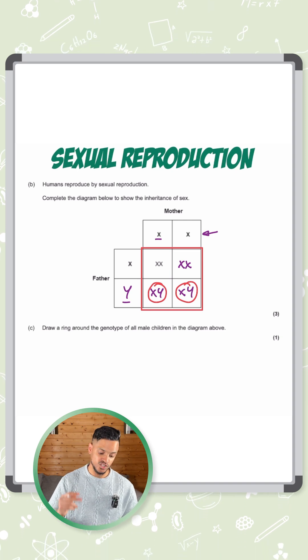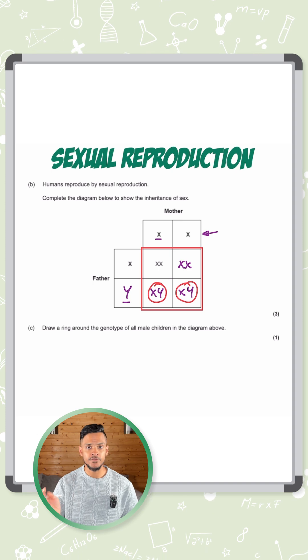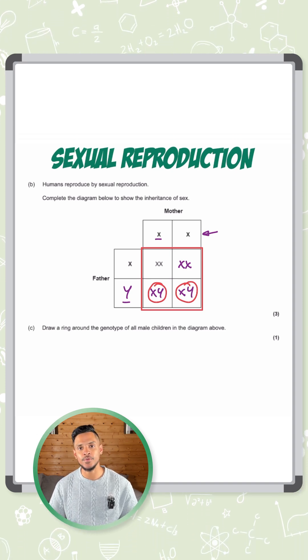That basically shows you that you have a two in four chance, or in other words, a 50% chance of having a male or a female. That's how you get all the marks here for this question.